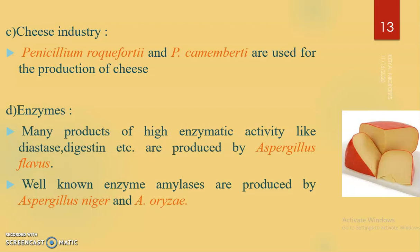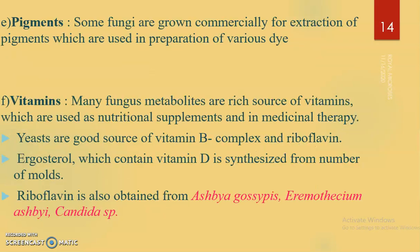Enzymes: many important enzymes are produced by fungi. For example, diastase is produced by Aspergillus flavus, and amylase is produced by Aspergillus niger and Aspergillus oryzae. This amylase is widely used in laundries. Many important enzymes are prepared using these fungi.